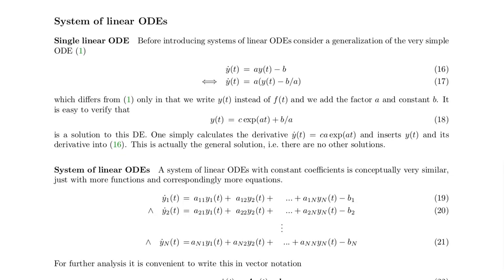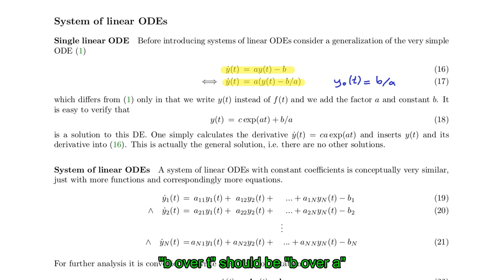Let us start by considering a very small system of linear differential equations, namely a single linear ODE, which can also be written in a second form. The second form makes clear that y(t) = b/a is one particular solution of this differential equation. If you insert this, the right side equals zero, y-dot equals zero, and the solution stays constant at the value of b/a. So this is a fixed point of this differential equation.